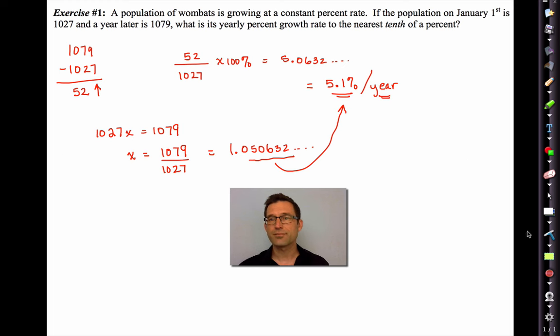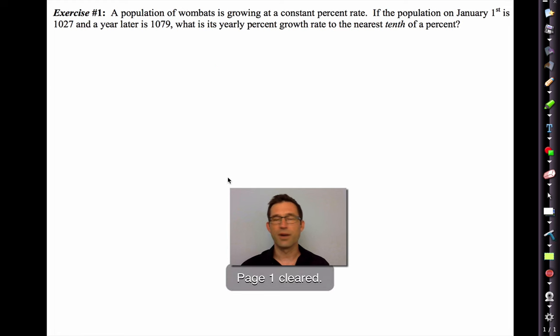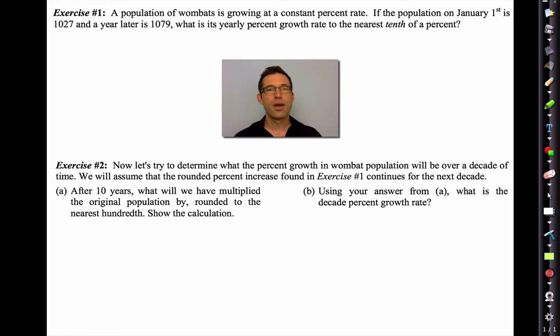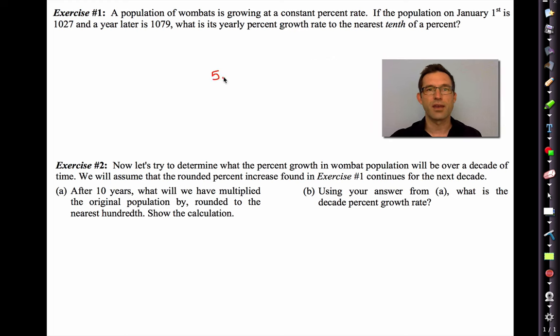Now let's try to determine what percent growth in the wombat population will be over a decade of time. We will assume that the rounded percent increase found in Exercise 1 continues over the next decade. So remember, we were going up by 5.1% per year. Letter A says, after 10 years, what will we have multiplied the original population by rounded to the nearest hundredth? Show the calculation.